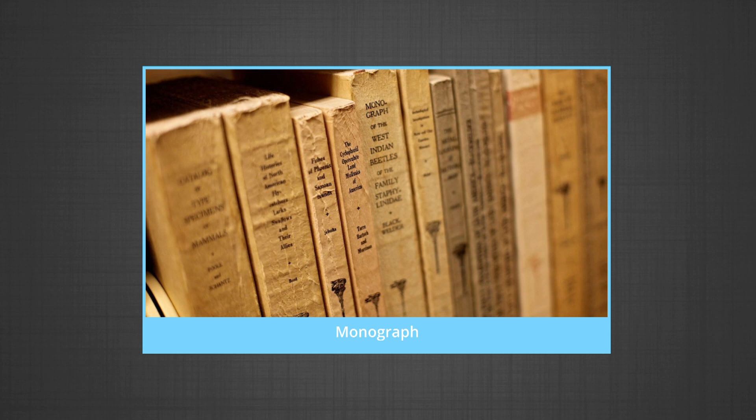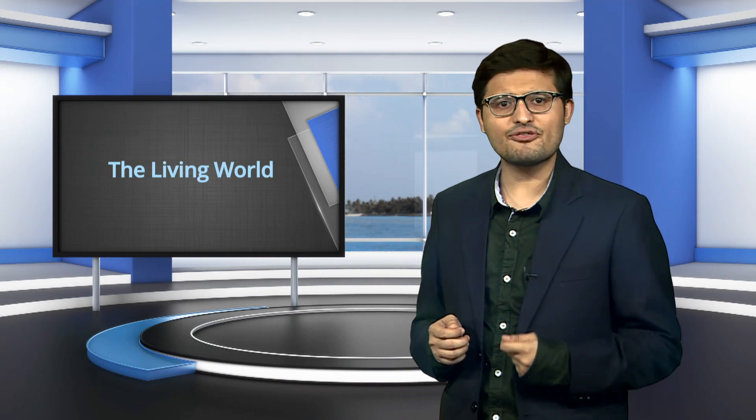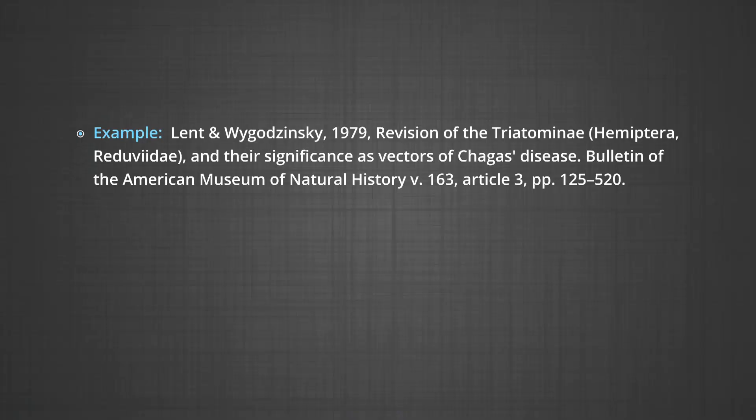In biological taxonomy, a monograph is a comprehensive treatment of a taxon. Monographs typically revise all known species within a group, add any newly discovered species, and collect and synthesize available information on ecological associations, geographic distribution and morphological variations within the group. For example, Lent and Wygodzinsky's 1979 revision of Triatominae and their significance as vectors of Chagas disease. The first ever monograph of a plant taxon was Robert Morison's 1672 Plantarum Umbelliferarum Distributio Nova, a treatment of the Apiaceae.